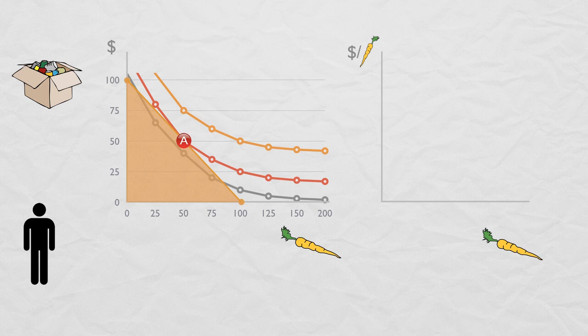Now, at the price of $1, Ezekiel is buying 50 carrots. We can put that point on a new graph.